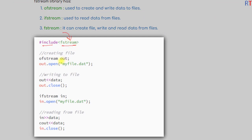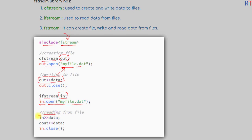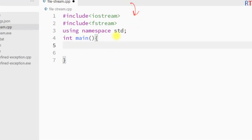First of all we have to include the fstream header in our program, then we create an object of the output file stream and use the object to create and open a file, and then we can write data to that file. After that we can create the input file stream object, use the object to open a file, and read data from that file, like in this example program.